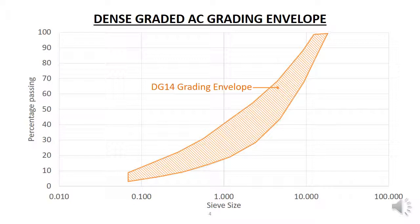Let's look at the differences between the DG and the AC mixes using grading envelopes. We looked at grading envelopes in the aggregate topic when we examined the acceptable grading curves for base course. This slide shows the grading envelope for DG14 in orange stripes. The horizontal x-axis shows the varying sieve sizes on a log scale, and the vertical y-axis shows the percentage passing each sieve size. The grading envelope is the area between the maximum and minimum proportions allowable for each sieve size, and it shows the area in which an aggregate sample's grading curve needs to sit within for it to be suitable for use.